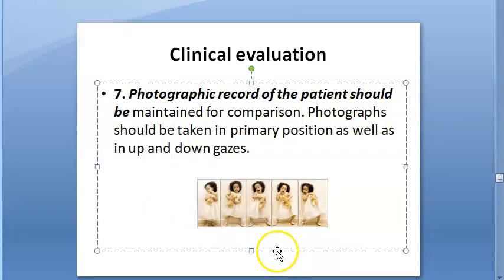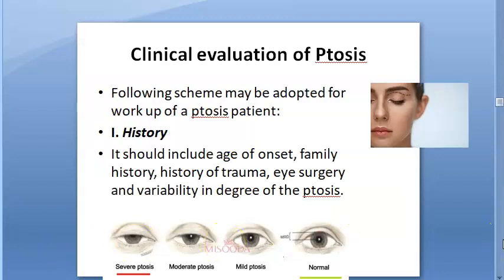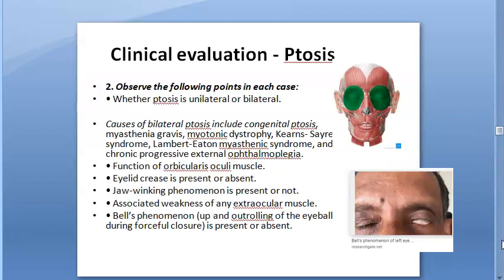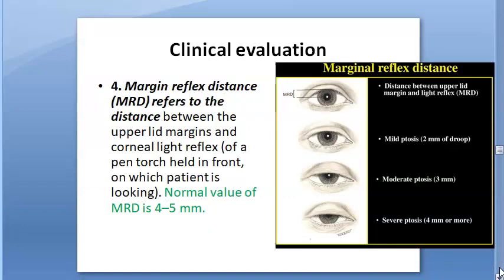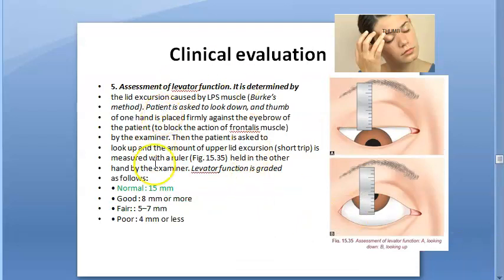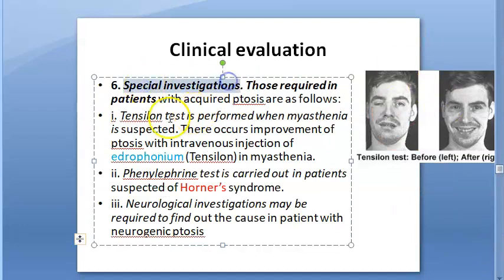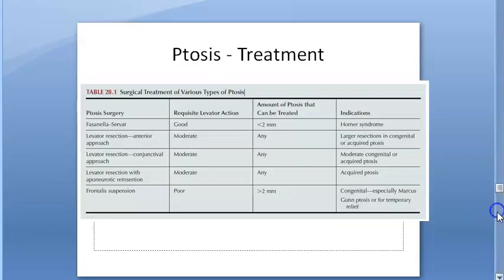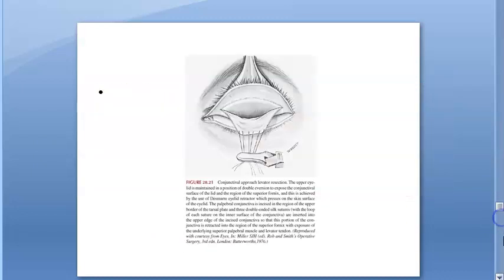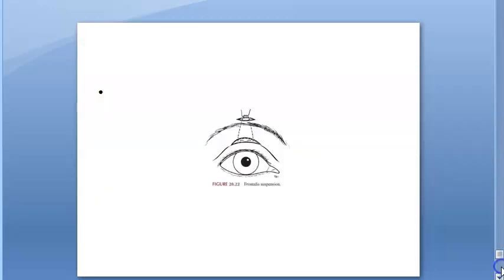Finally, photographic records of the patient should be taken and maintained for comparison. To summarize clinical evaluation of ptosis: take history, exclude pseudo-ptosis, check orbicularis oculi function, eyelid crease, jaw-winking phenomenon, extraocular muscle strength, and Bell's phenomenon. Then measure and grade ptosis, check MRD, assess levator function, perform special investigations (Tensilon test, Horner's, neurological), and take photographic records. The next video will cover treatment of ptosis.